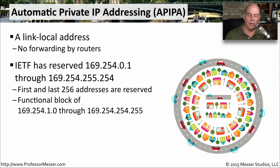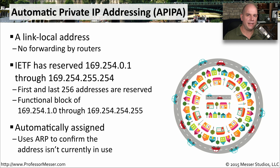We often refer to this as the "169 address," because when somebody receives a 169.254 address, you know they've gotten an APIPA address and must be having problems communicating to their DHCP server. If you don't have a statically assigned address and can't talk to a DHCP server, this APIPA address will effectively be random — assigned by your operating system, which uses ARP to check whether another device on the network has already been given that same address, ensuring there are no duplicates.